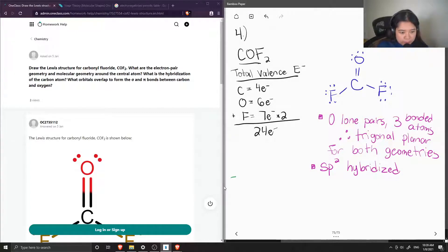So now when we have the pi bonds, this is when the p orbital of carbon, I'm going to say 2p, overlaps with the p orbital of oxygen to form the pi bond.